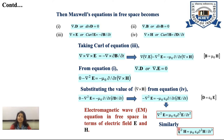The equation becomes del squared E equals epsilon naught mu naught del squared E over del t squared. Similarly, we can show that del squared H equals mu naught epsilon naught del squared H over del t squared. Both equations are the electromagnetic wave equations in free space in terms of electric field vector E and magnetic field vector H.